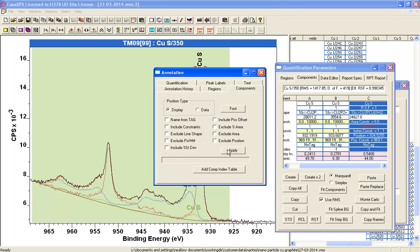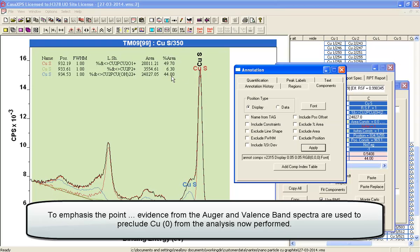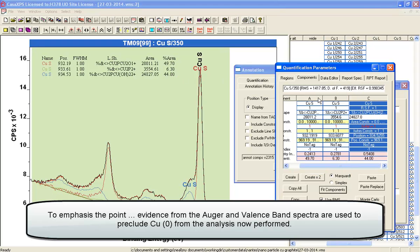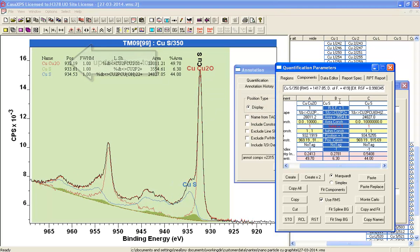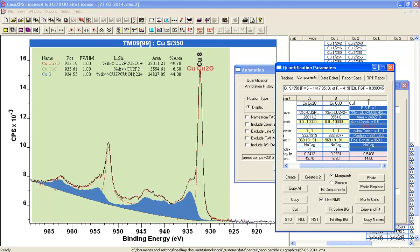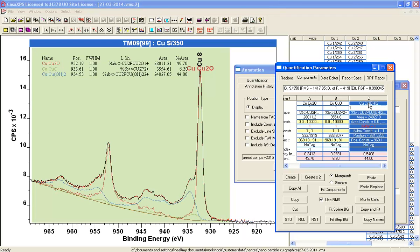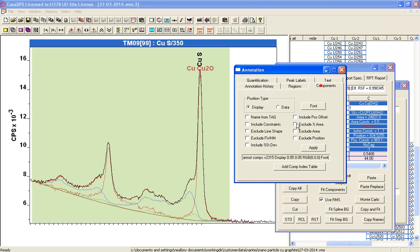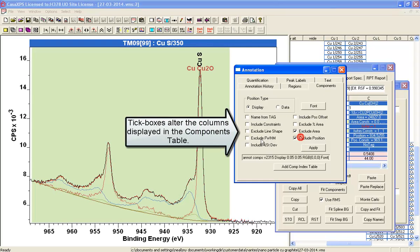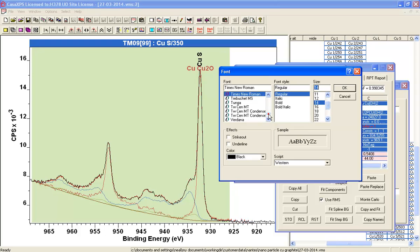If I show you the components table on the annotation, we can now see, and let's label these correctly, so that was the 1 plus Cu2O. This was the copper oxide CuO, and then we have a 2 plus hydroxide. I'll just delete this, and we'll remove some of the unnecessary information. I'll also increase and change the font.